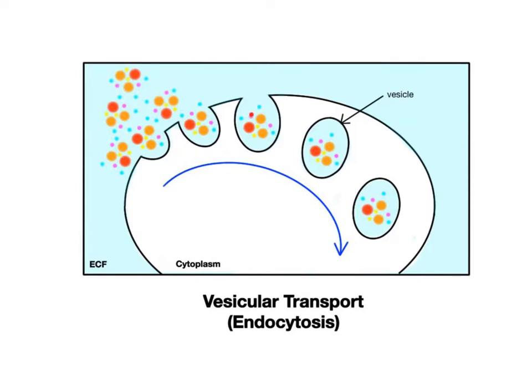the membrane will wrap around the chemicals, and a small piece of the membrane will pinch off, form a vesicle, and carry the solutes into the cytoplasm.